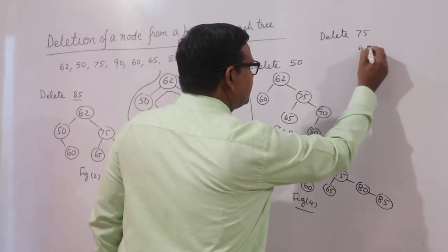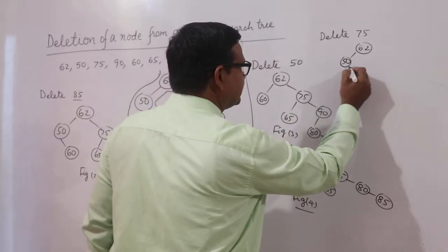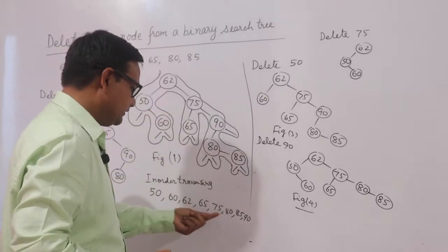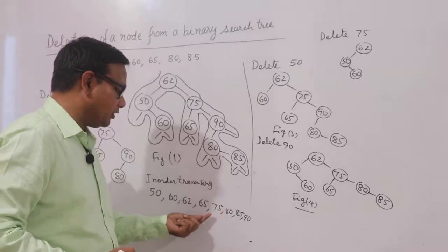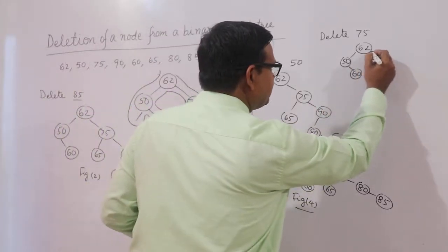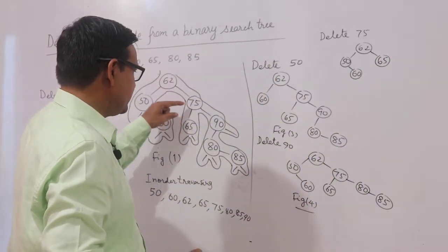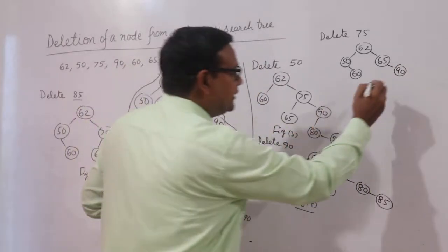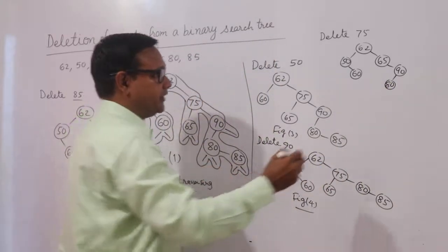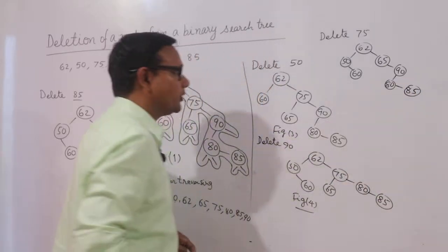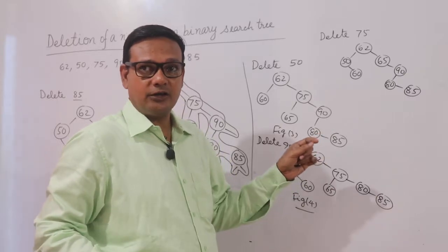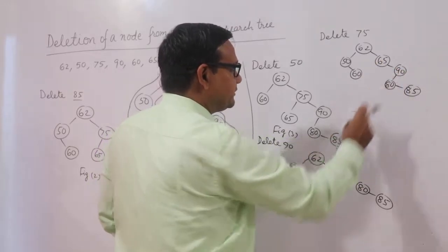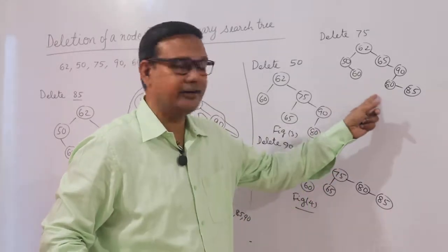First case: 62 is the root, its left child is 50, its right child is 60. Since 75 is deleted, I replace it with its in-order predecessor 65. The remaining nodes: 90 stays, 80 stays, and 85 stays. We can verify the BST property: 65 is greater than 62, 90 is greater than 65, 80 is less than 90, and 85 is greater than 80 — it follows BST properties.